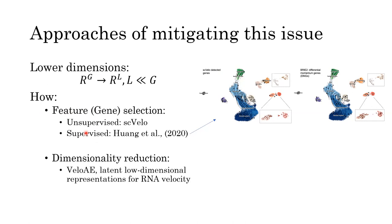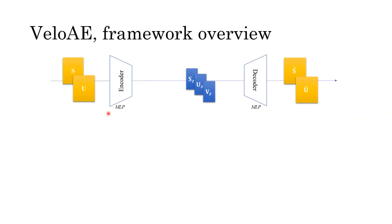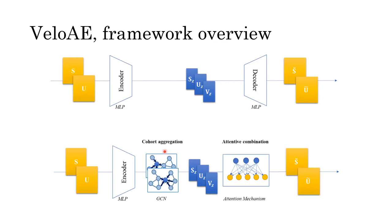To do so we propose a framework called VeloAE that is derived from the standard autoencoder framework. The derivations are two modules. The first called cohort aggregation, which is designed to encode the cellular neighborhood information into the latent representations.